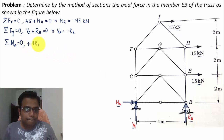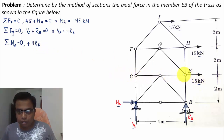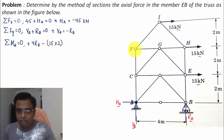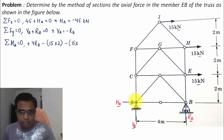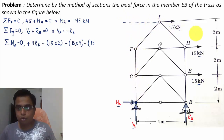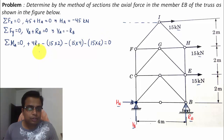RB tends to produce an anti-clockwise moment at A, so it is positive: 4 times RB. The first 15 kN force produces a clockwise moment at A, so it is negative: minus 15 multiplied by 2. The second 15 kN force also produces a clockwise moment: minus 15 multiplied by 4. The third 15 kN force has a perpendicular distance of 2 plus 2 plus 2 equals 6, so minus 15 multiplied by 6 equals zero.